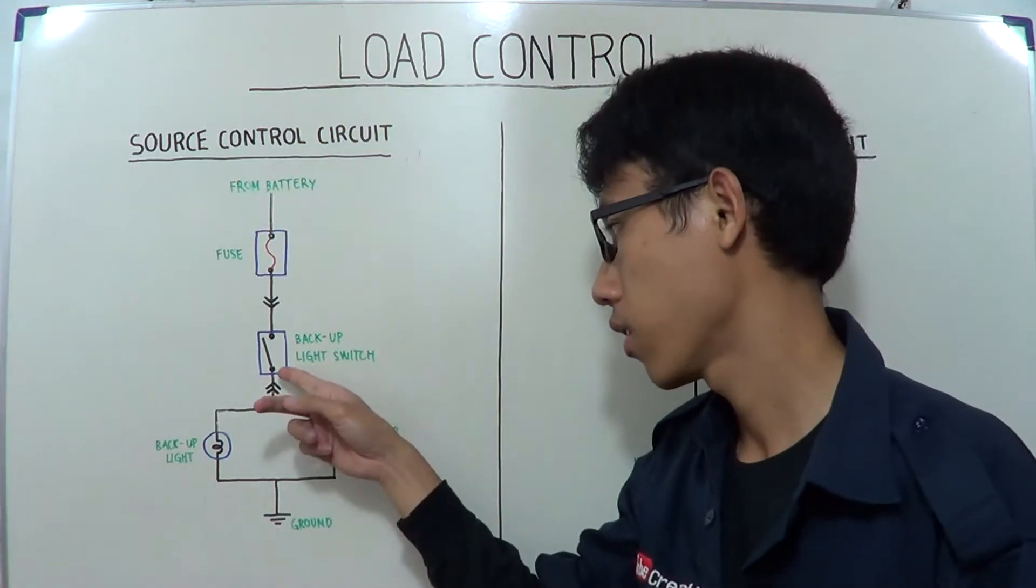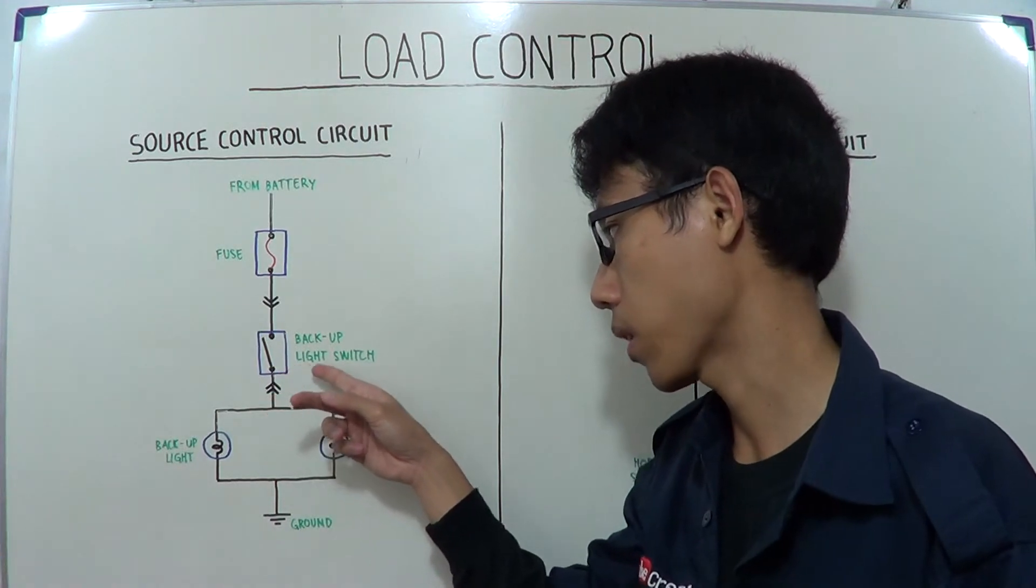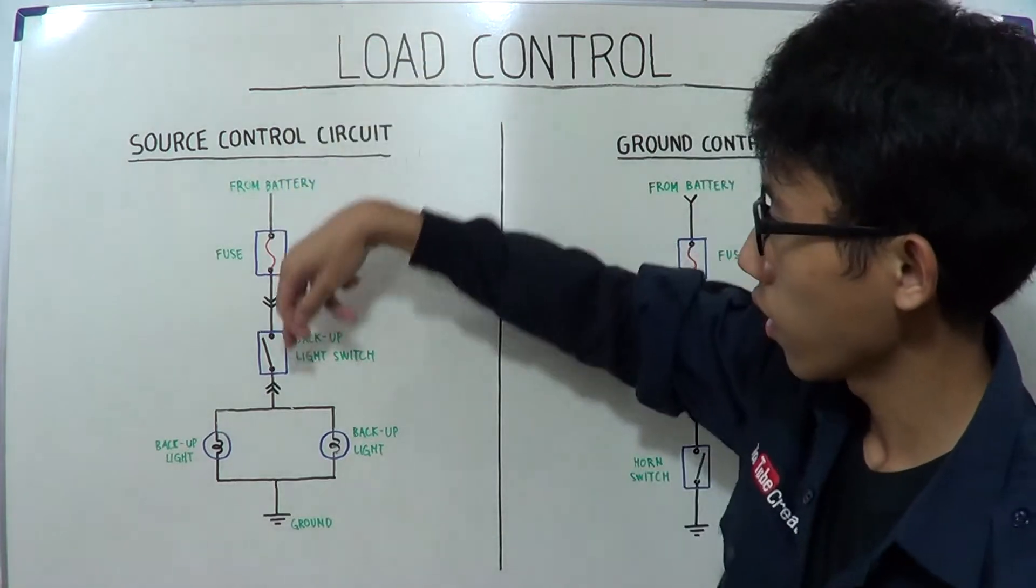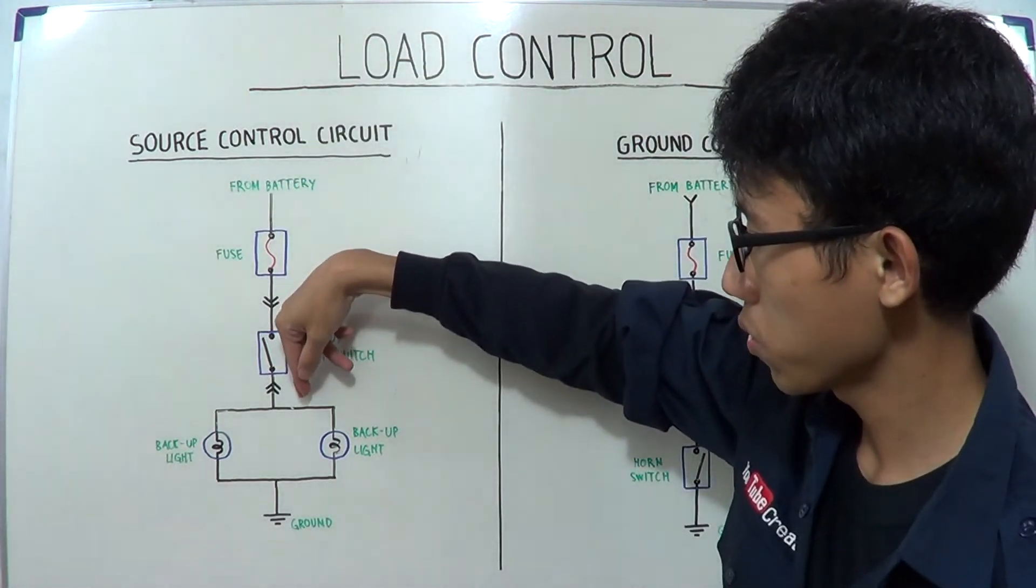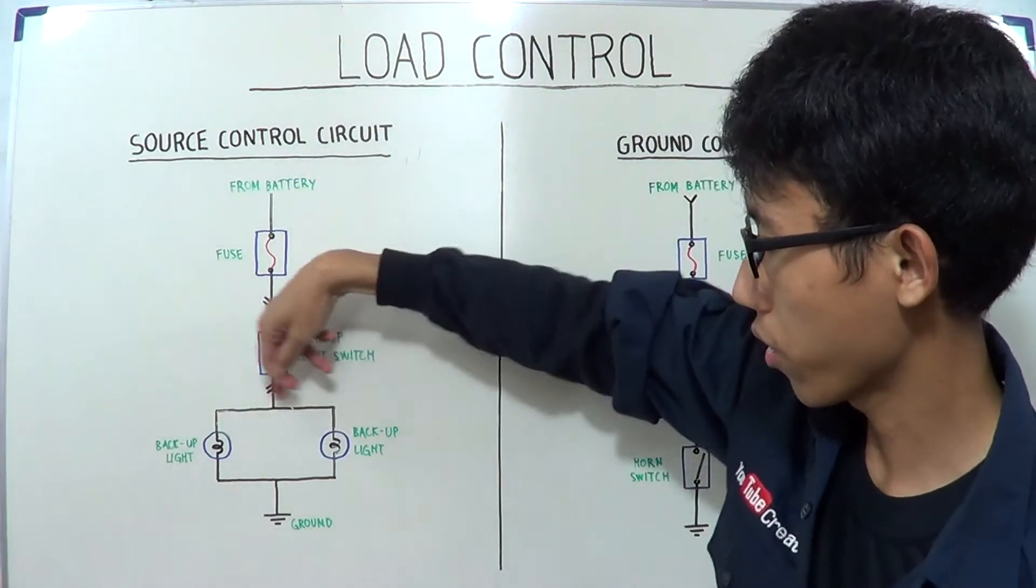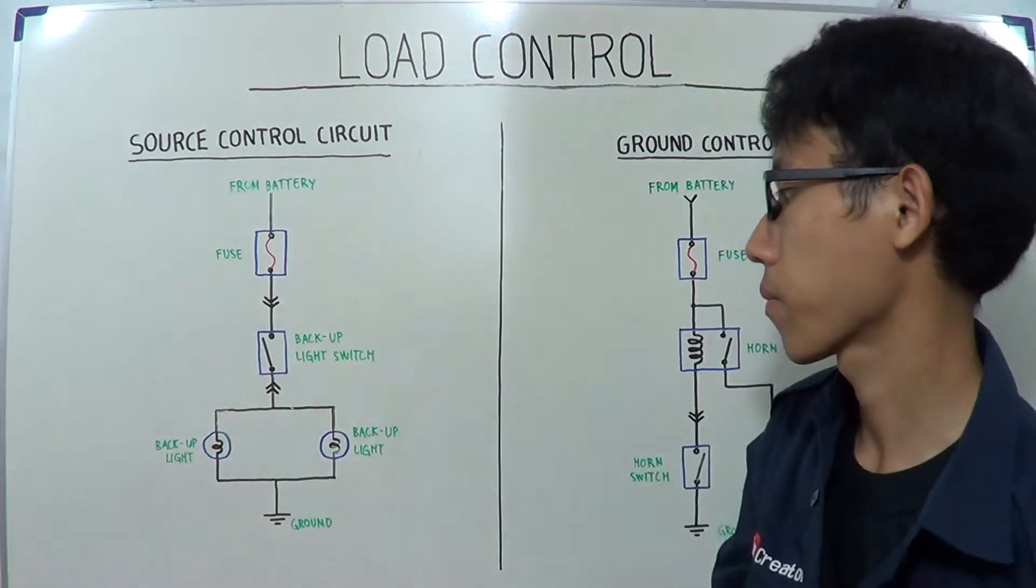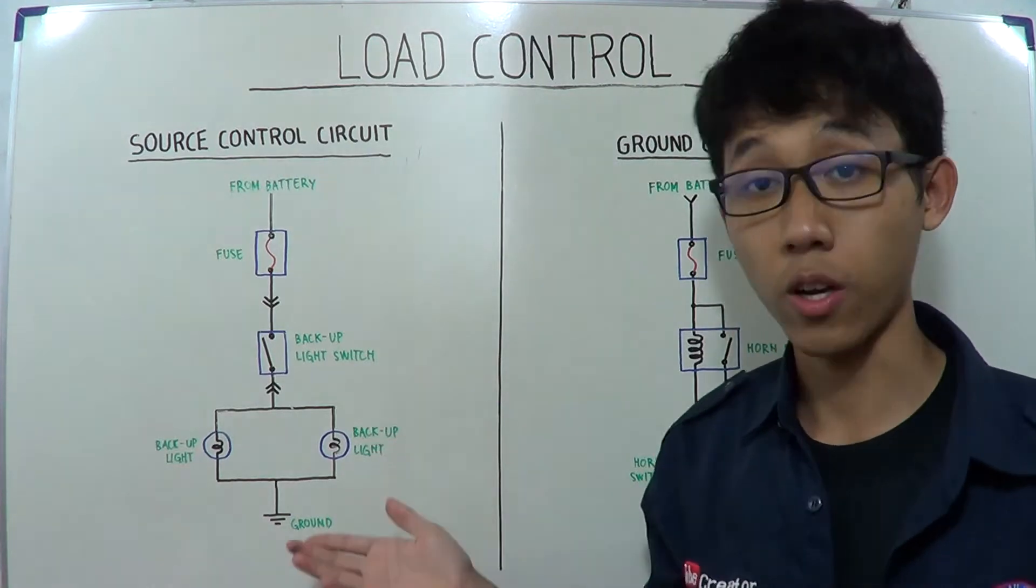If you turn the backup light switch on, on the shift gear, the electric current flows to the backup light both right and left and to the ground. Consequently, the backup light turns on.